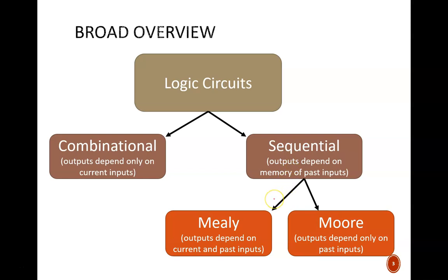There are two categories underneath sequential circuits: Mealy and Moore. A circuit following a Moore model, or more colloquially a Moore machine, features outputs that depend entirely on the memory of past inputs. A Mealy machine depends on both the memory and current inputs.